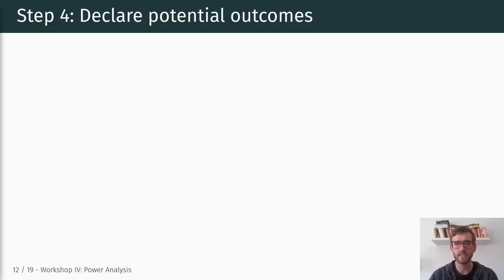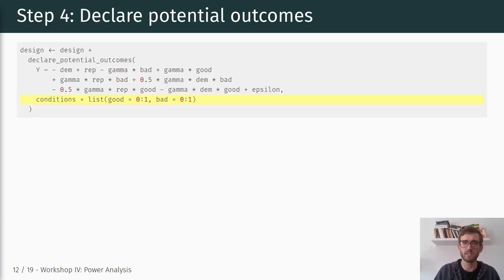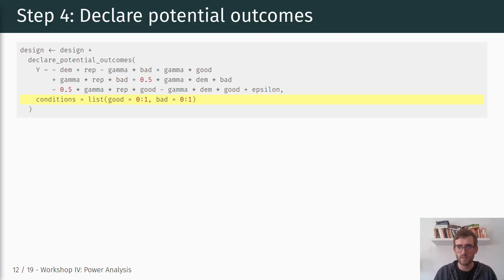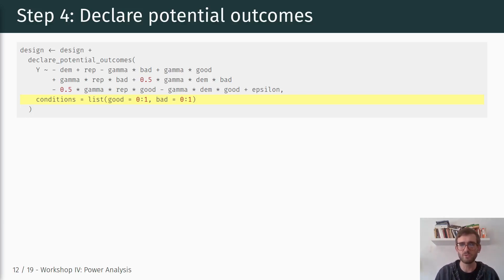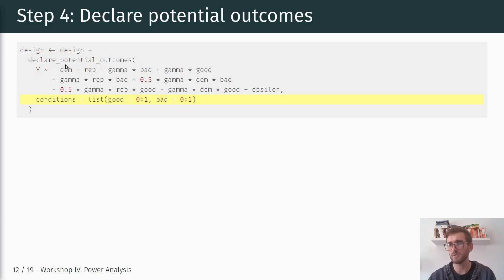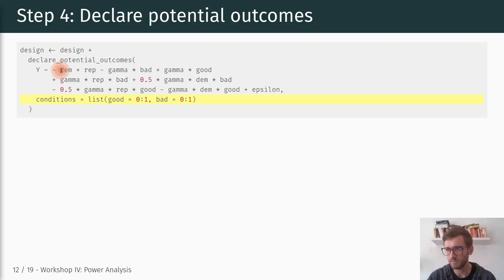After creating these additional variables, we move to the next step: declaring potential outcomes. This is where our assumed data generating process comes in. We're declaring — assuming the fundamental problem of causal inference didn't exist — all potential outcomes for each observation. We're declaring potential outcomes for Y, our outcome variable, which is just translating the data generating process I outlined in the previous video into R.